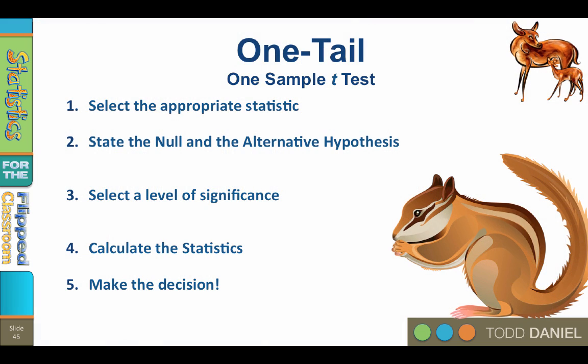Step number one, select the appropriate statistic. We will use a one-sample t-test looking only in the upper direction. Step two, state the null and alternative hypothesis. Here we're going to start with the alternative hypothesis rather than the null hypothesis. It is always easier to write the alternative hypothesis for a one-tailed test first, and then do the null hypothesis.